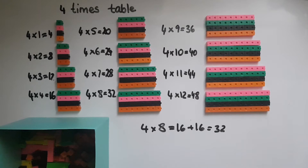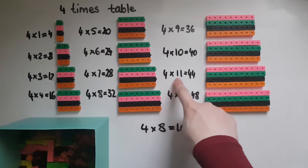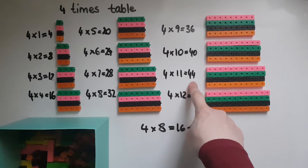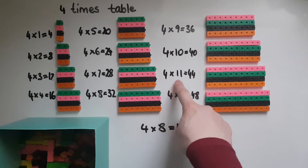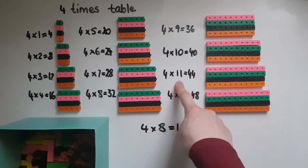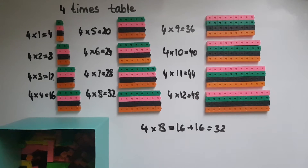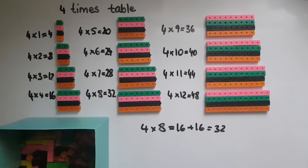Let's try another example: four times eleven. Two times eleven is twenty-two, and another twenty-two gives us forty-four. You can do that with any of these times tables, and it makes working out the four times table very easy.